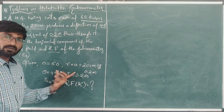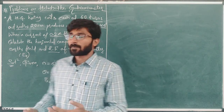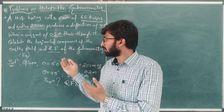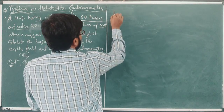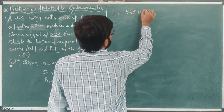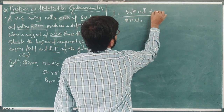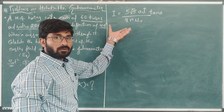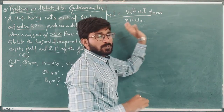To find BH and the reduction factor, we need the expression for current passing through the Helmholtz galvanometer. The expression is: I = (5√5 × BH × r) / (8 × n × μ₀) × tan θ. We now substitute the given parameters — the deflection angle, current, radius, number of turns, and μ₀.